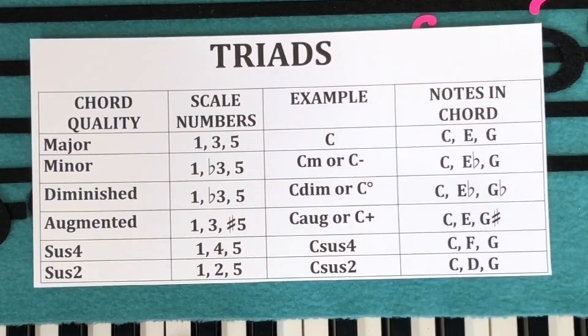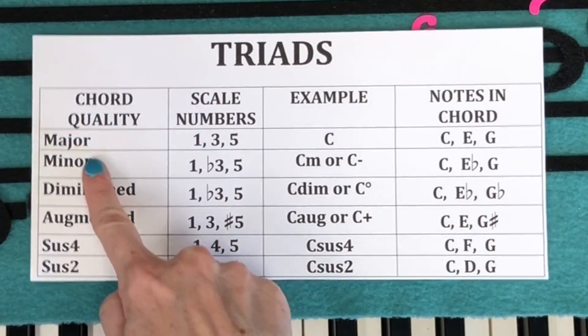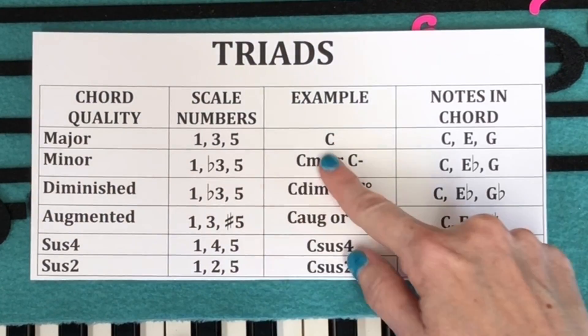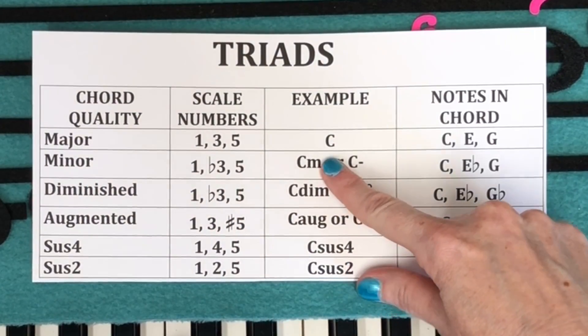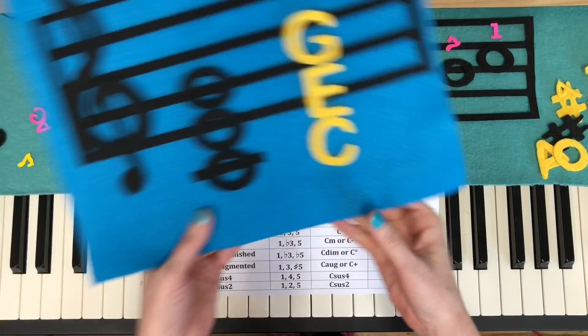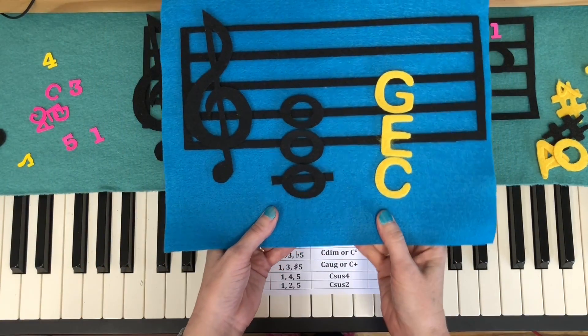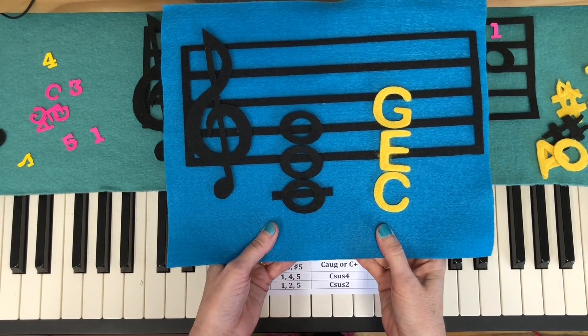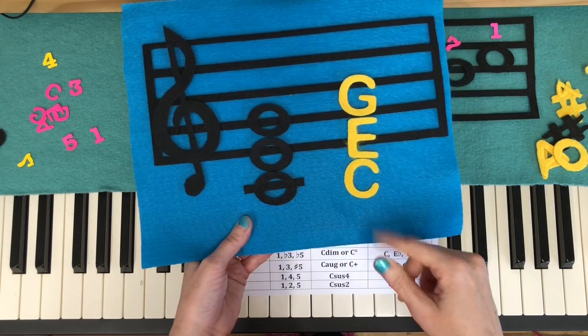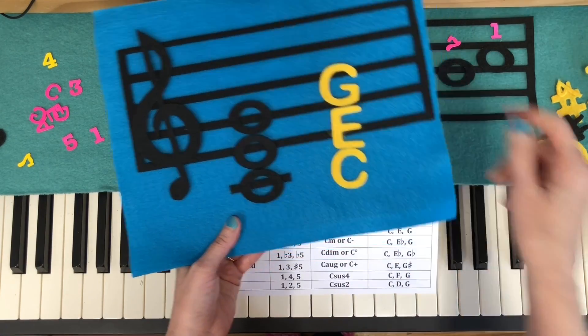We're going to go through the triads first. We already have major, which is one, three, and five of the scale. We stack it, and it looks like that. Our C major chord has C, E, and G.